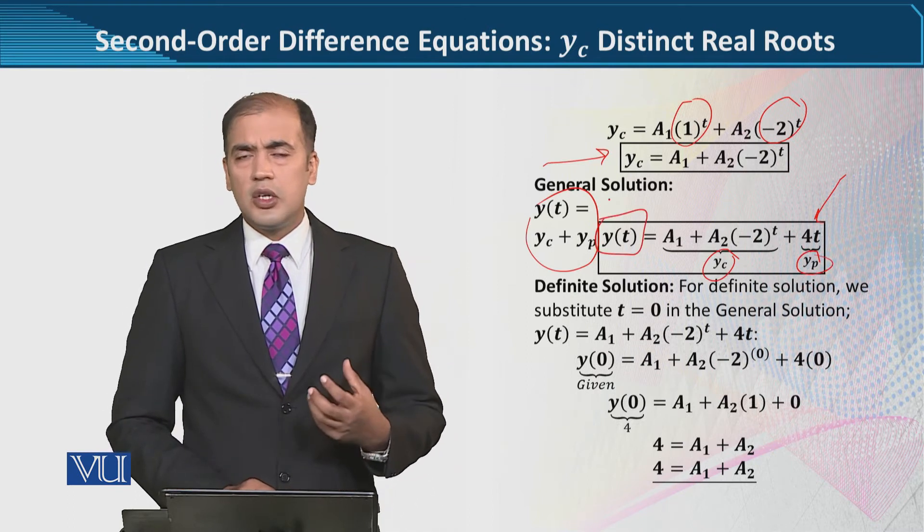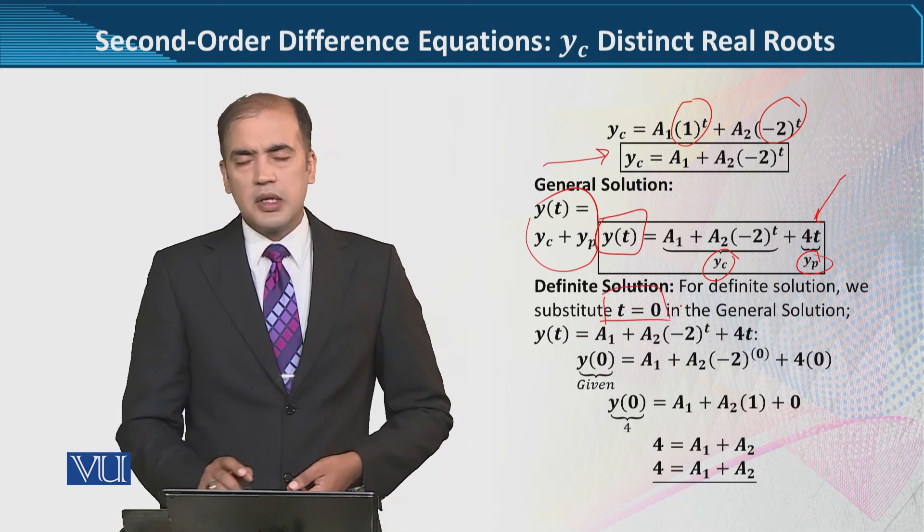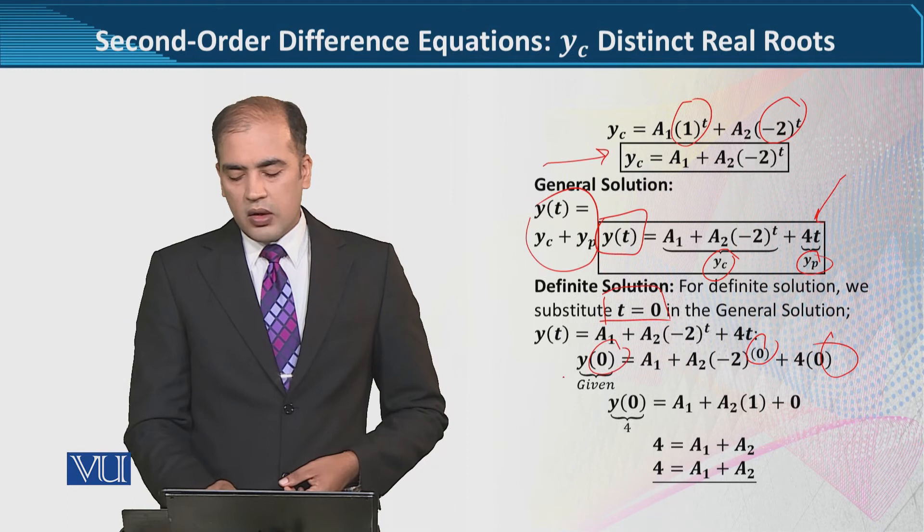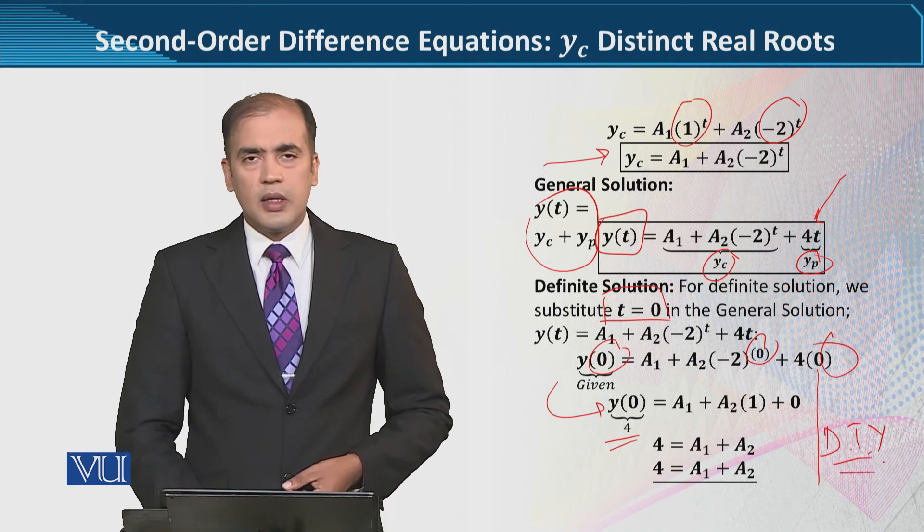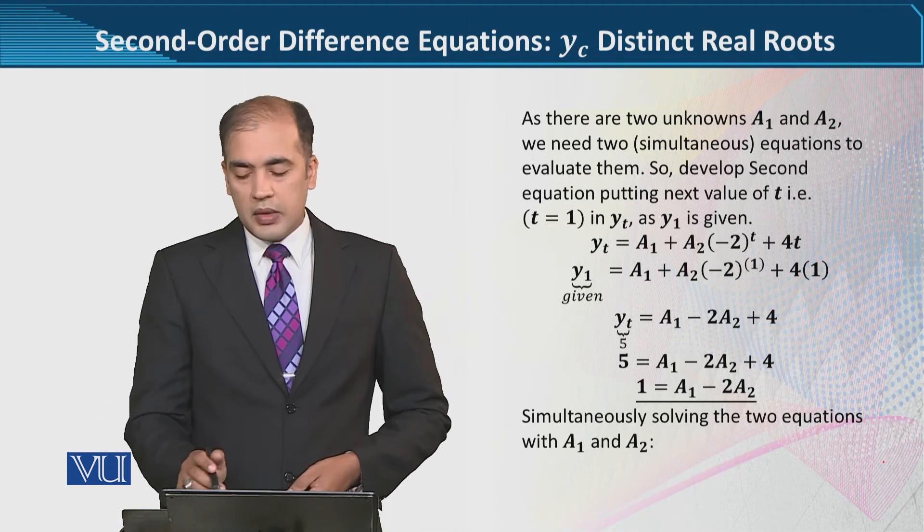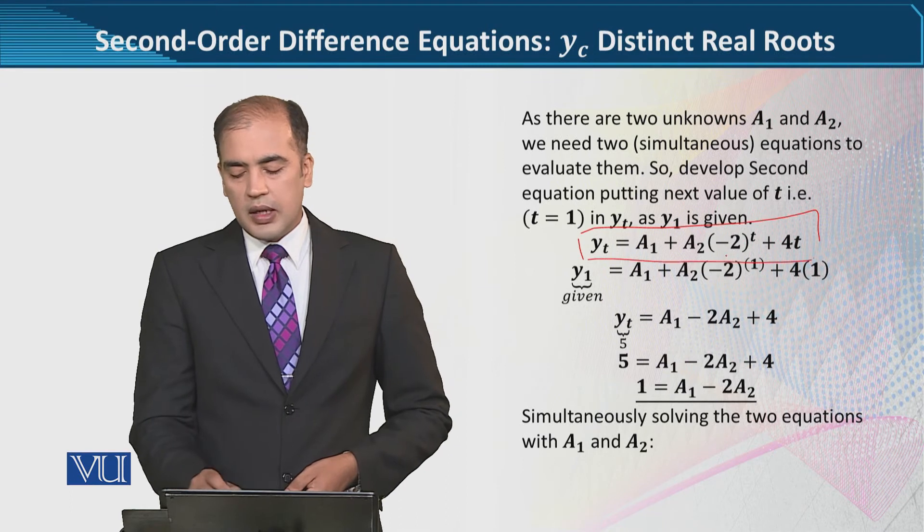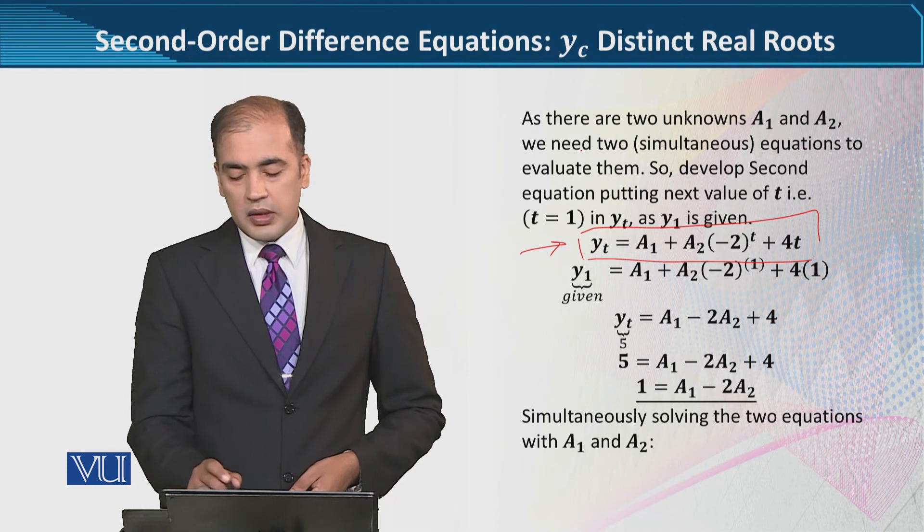We can find the definite solution. When we have T equals 0, we can see there is 0. The value given was 4. The right-hand side of the simplification will be repeated. So you will have an equation which is A1 and A2.